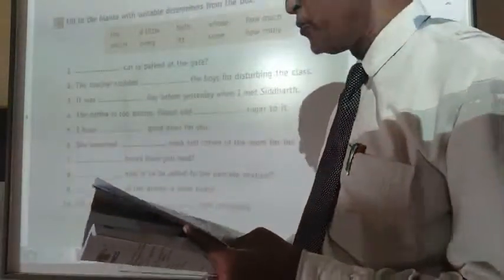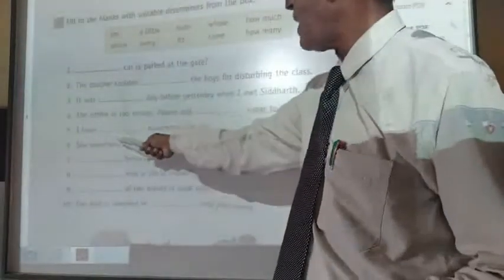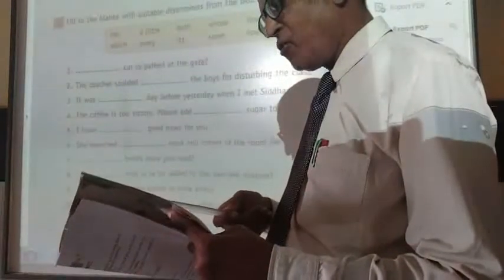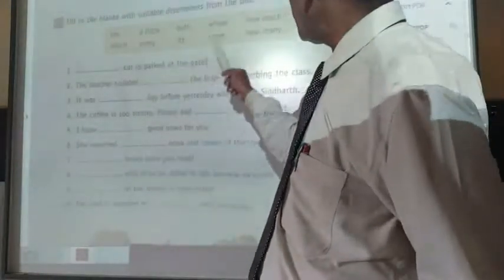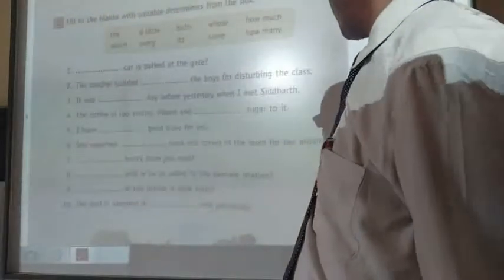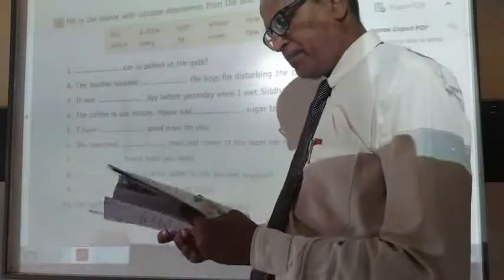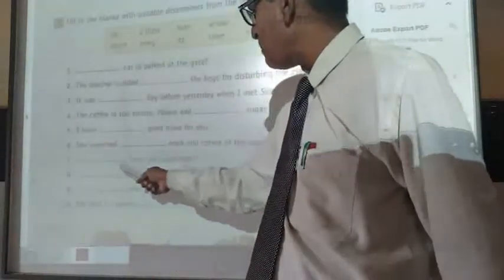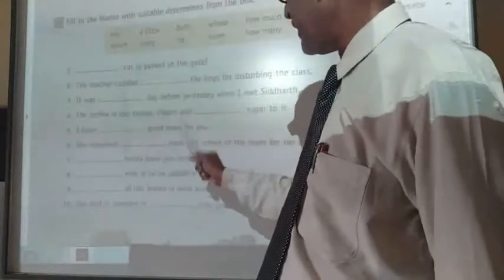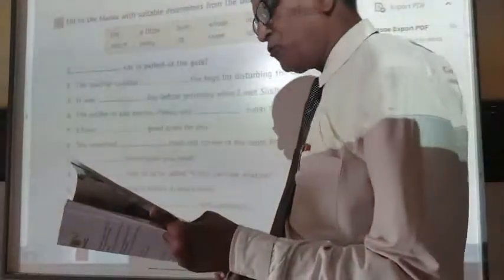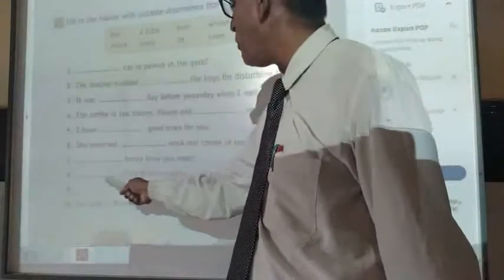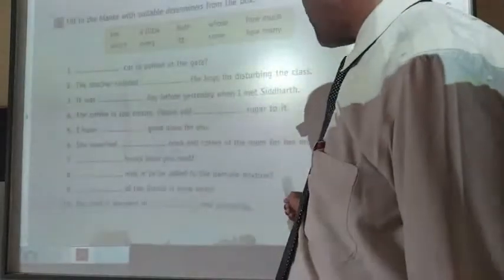Six. She searched dash nook and corner of the room. She searched every nook and corner of the room for her missing ring. Seven. Dash books have you read? How many? Because books are countable here. So how many books have you read. Next. Dash milk is to be added. How much milk is to be added to the pancake mixture.